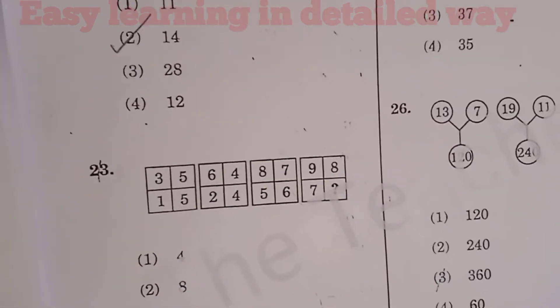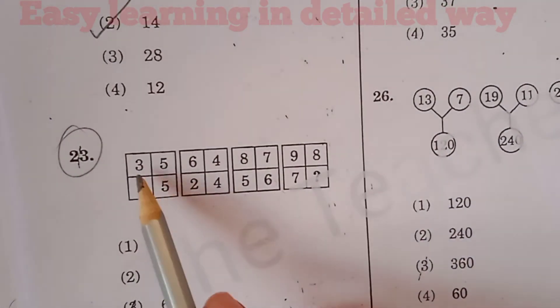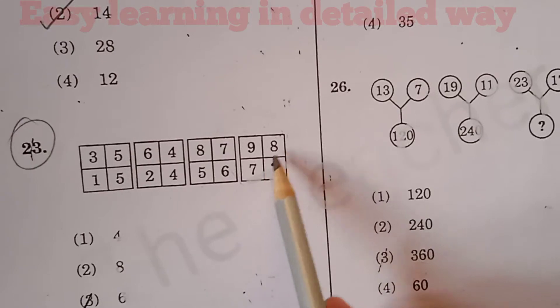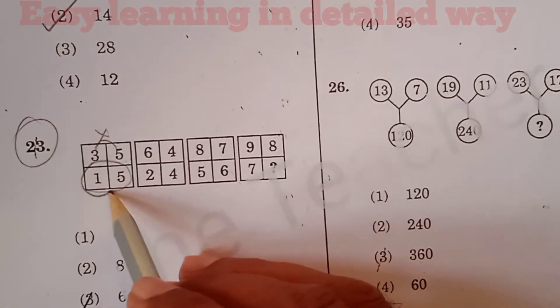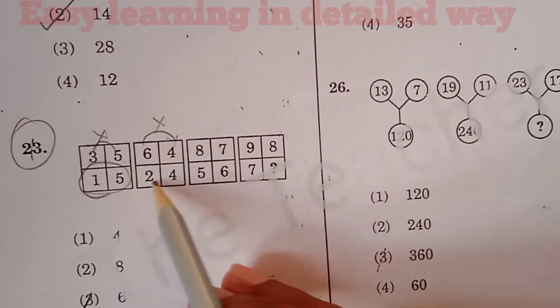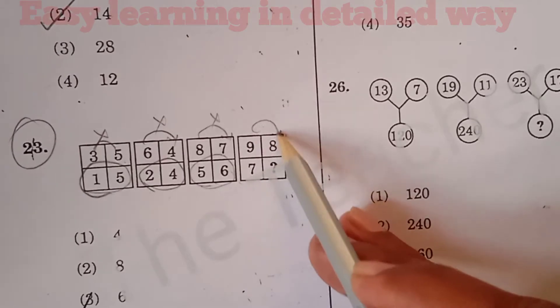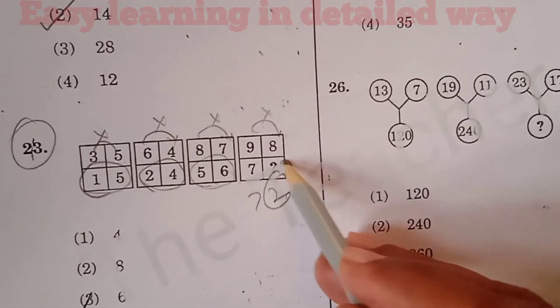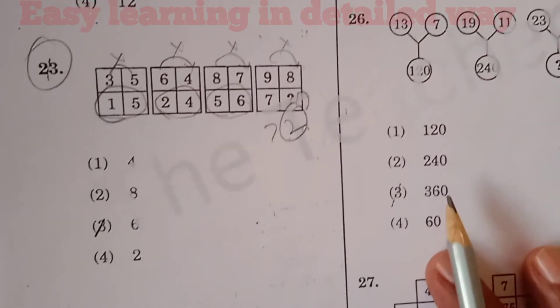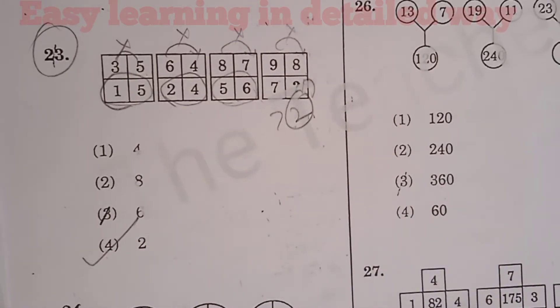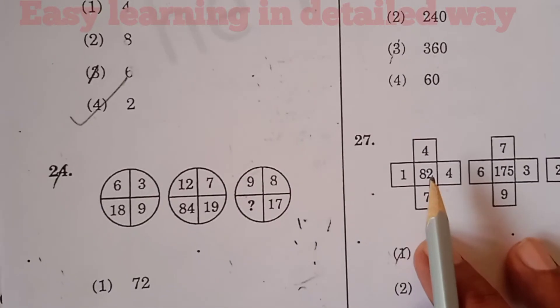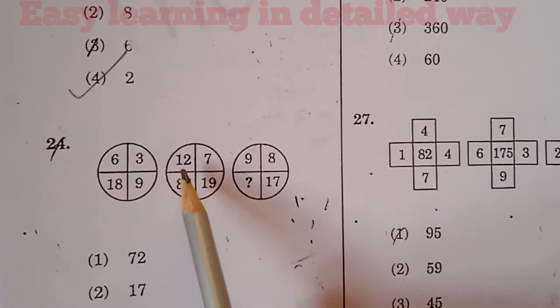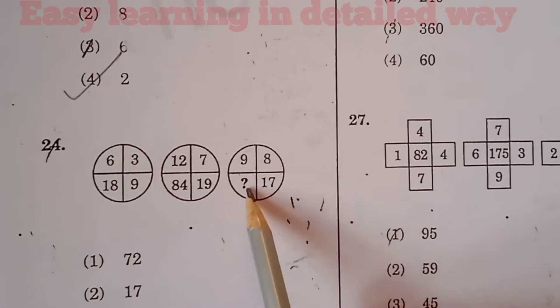Question number 23: We have sets like 3, 5, 15; 3, 5, 6, 4, 24; 8, 7, 56; and 9, 8, 7, question mark. Also noting the pattern with 6, 3, 9, 18; 12, 7, 84; 9, 8, question mark, 17.